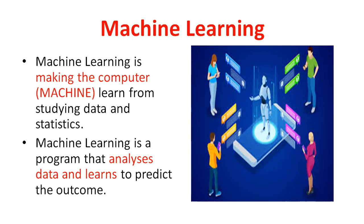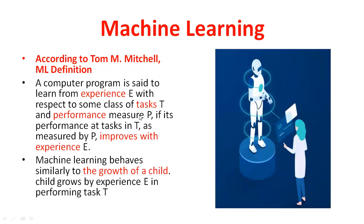What is machine learning exactly? Machine learning is making the computer learn from the studying data — that means from previous data, the computer will learn something from historical data. It is an algorithm used to explore the data. The machine learning system uses statistical tools to learn something from historical data, and it is a program that analyzes the data and learns to predict the outcome.